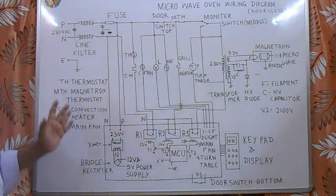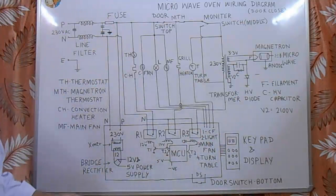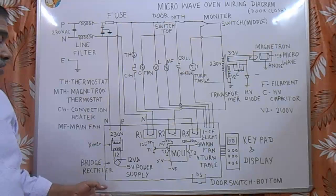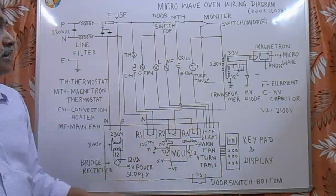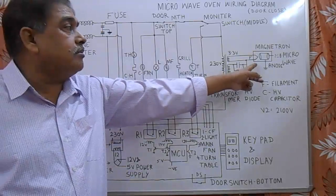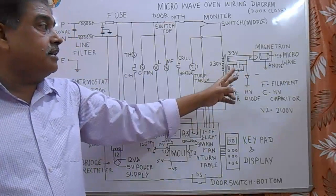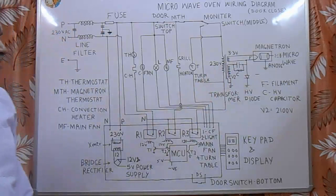The main important part of this circuit is this main control PCB and second one is this magnetron and this high voltage transformer. These are the main things in this circuit.